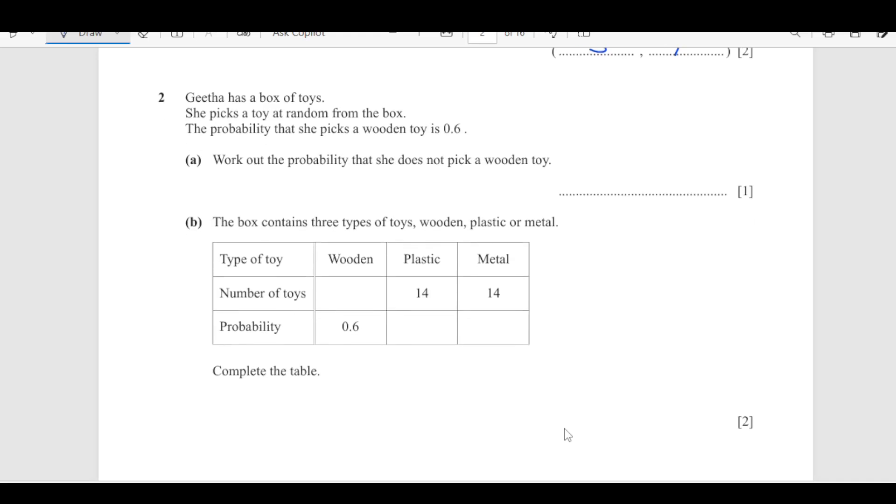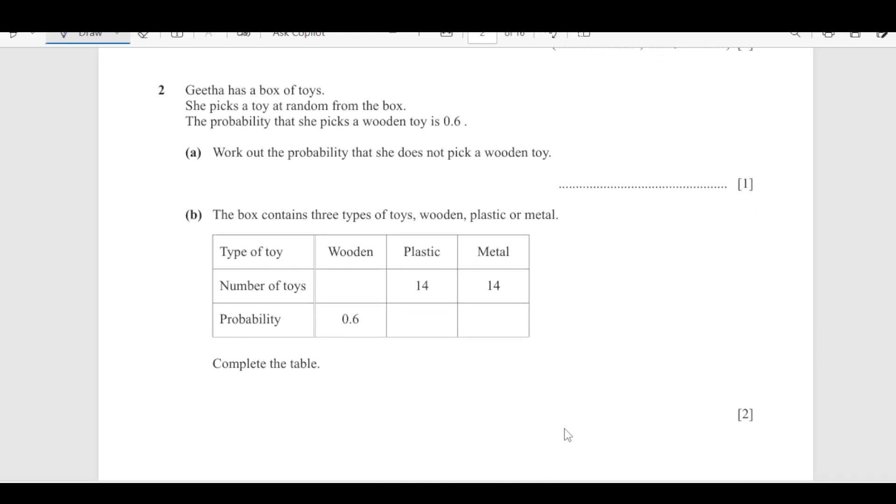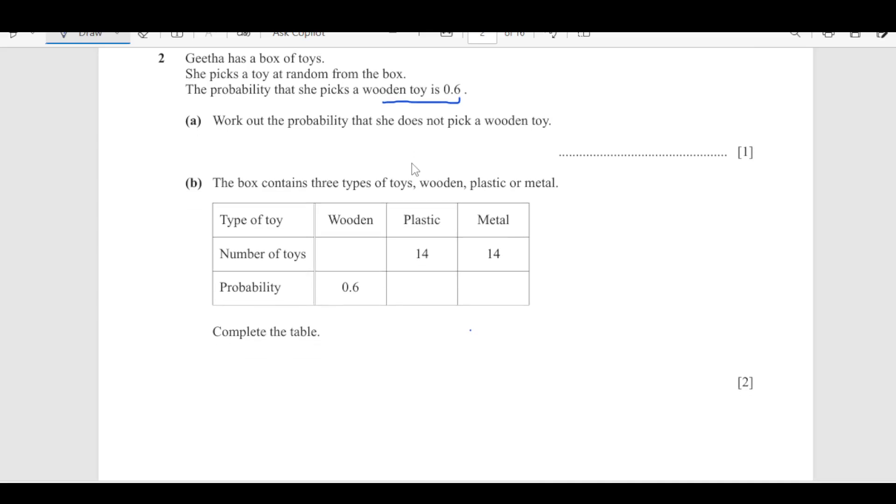Now, number 2. Geeta has a box of toys. She picks a toy at random from the box. The probability that she picks a wooden toy is 0.6. Work out the probability she does not pick a wooden toy. So, that is going to be 1 minus 0.6, which is 0.4.